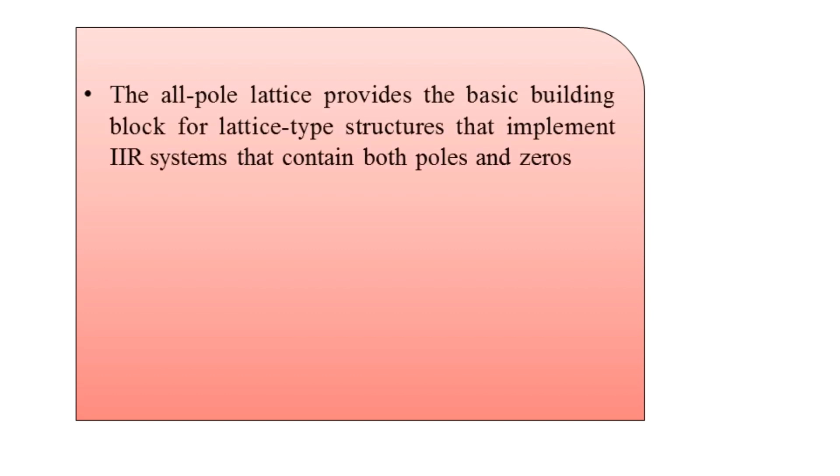As the title suggests, we are going to study in two parts: first, what are the ARMA processes, and then the lattice-ladder filters. We have already covered the introduction to ARMA processes — AR standing for autoregressive, MA standing for moving average. The all-pole lattice provides the basic building block for the lattice-type structure that implements infinite impulse response systems containing both poles and zeros, as seen in the previous topic.